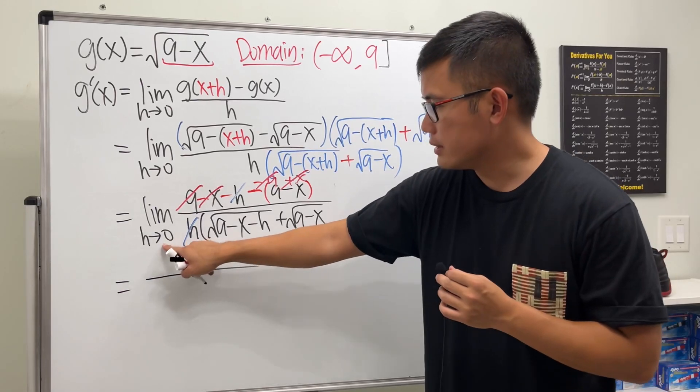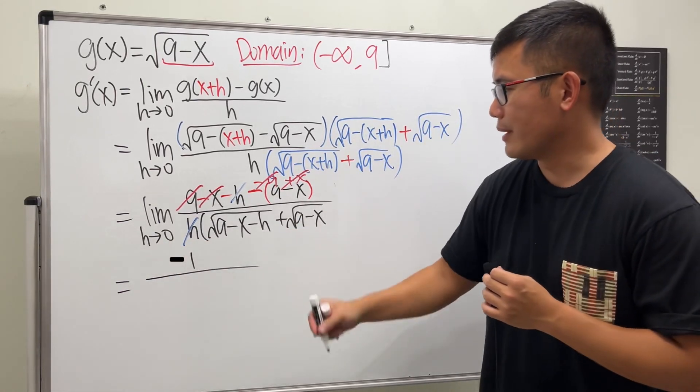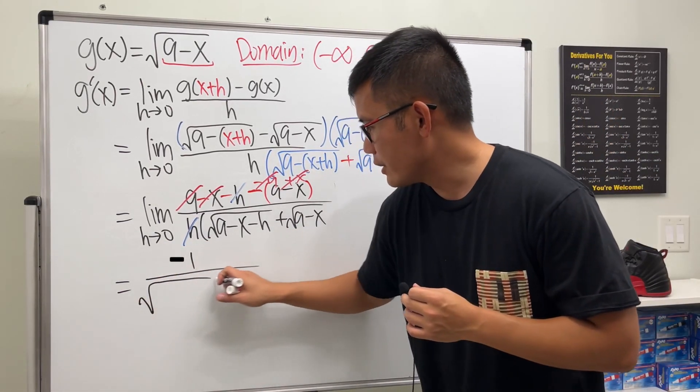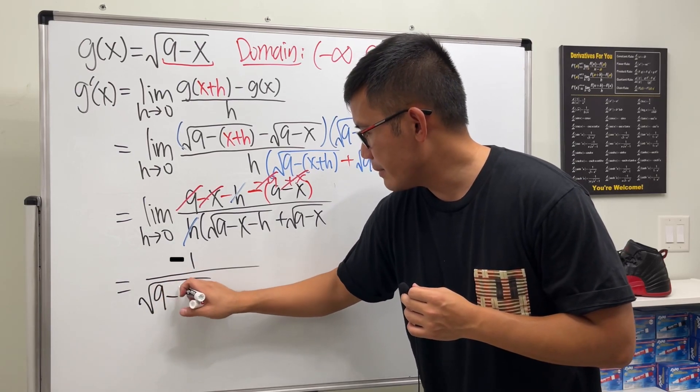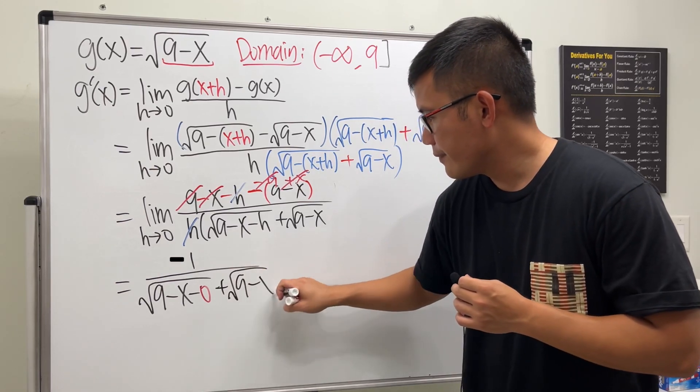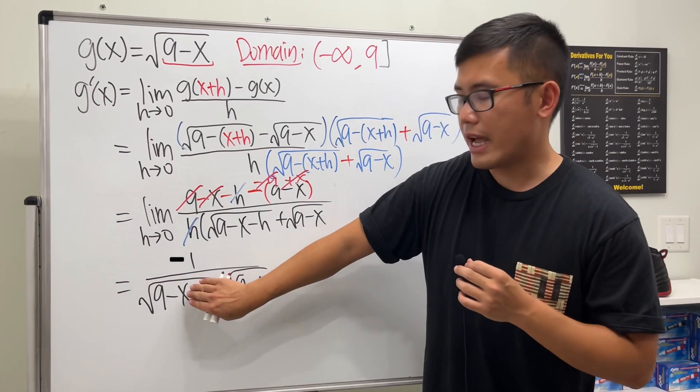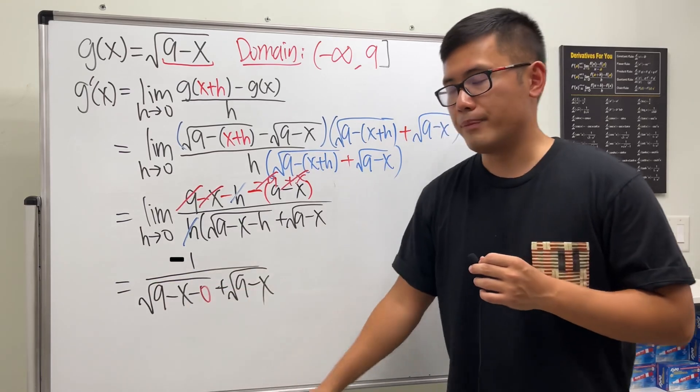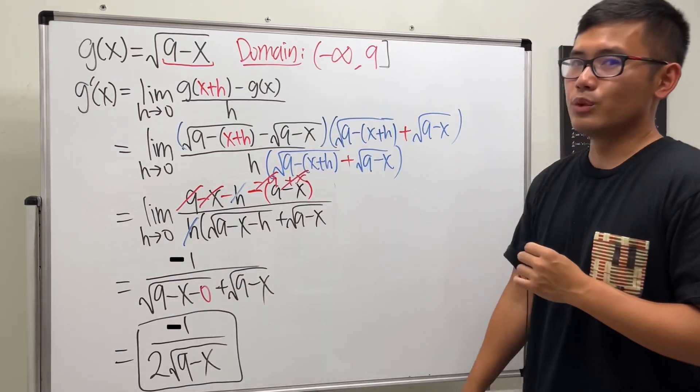And now put the 0 into the h's. So here we have square root of 9 minus x minus 0, and then plus another one. But this is just square root of 9 minus x, and we have two of them. So altogether, that's the derivative.